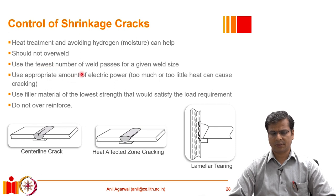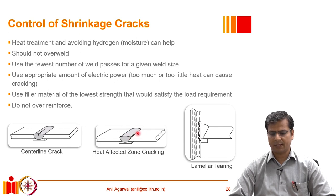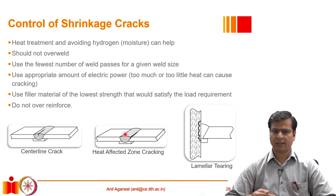We should also minimize the number of weld passes. For example, a 12 mm thick weld can be done in one pass with a large electrode, or in two passes of 6 mm each with a smaller electrode. While multiple passes are acceptable, we should not overdo it and should optimize the electrode size to accomplish the task with the minimum possible number of passes — because every pass heats and cools the system again, introducing new thermal stresses.